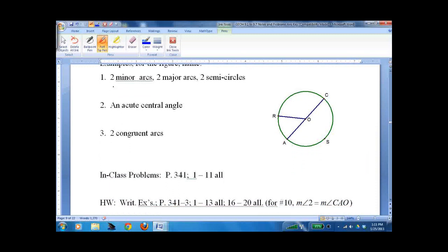Two minor arcs would be arc AR and arc RC. Two major arcs would be RAC. And let's go with arc ASR. And two semicircles would be AC and CA. An acute central angle would be angle ROA.